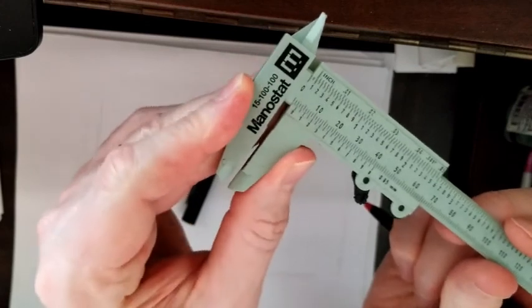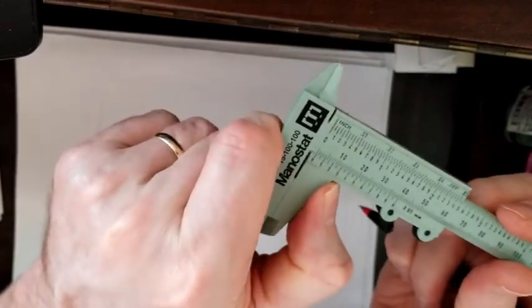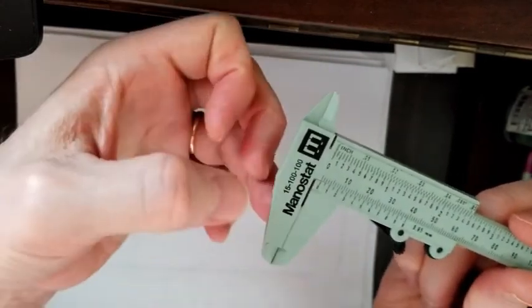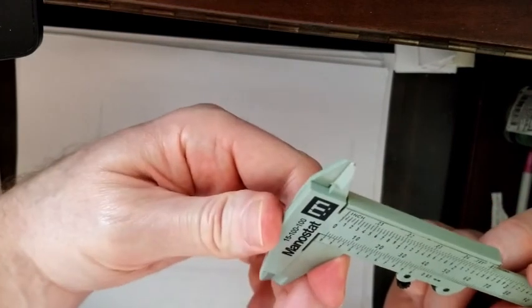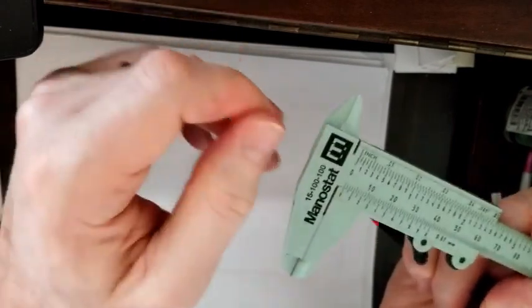When they are pressed together like that, the zeros should line up on the bottom, and it might be just a little bit off. Sometimes you have to press hard.